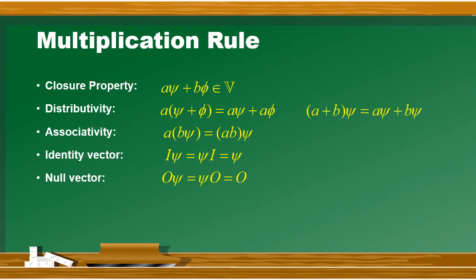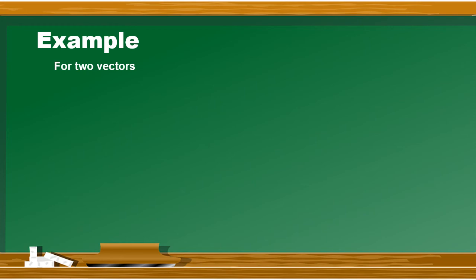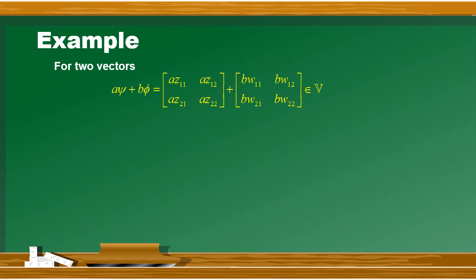जैसे हमने addition rule की properties को एक example के through understand किया था, उसी तरह से multiplication rules की properties को एक example के through elaborate करते हैं. For example हमारे पास दो vectors हैं psi and phi - पहले matrix को A scalar number के साथ और दूसरे matrix को B scalar number के साथ multiply किया. Multiply करके जब इनको add करेंगे तो कोई vector बनेगा जो इस vector space का ही element होगा. तो इसको closure property of the multiplication rule का नाम दिया जाता है.